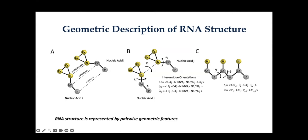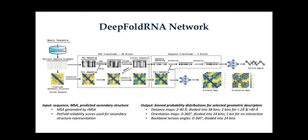We represent the RNA structure using these simplified geometric descriptions. If we have the actual RNA structure, it's straightforward to calculate these features. But in reality we have to predict them. We use a machine learning architecture similar to what has been successful for advanced protein structure prediction networks.